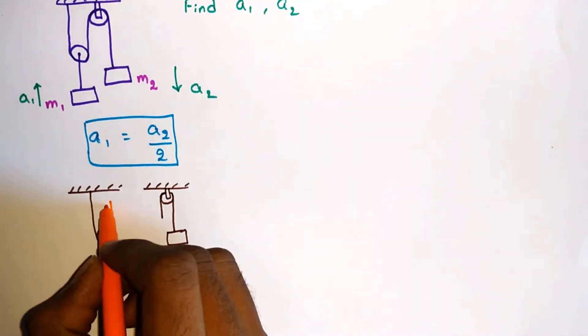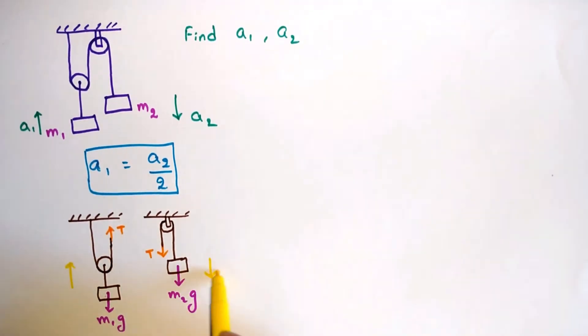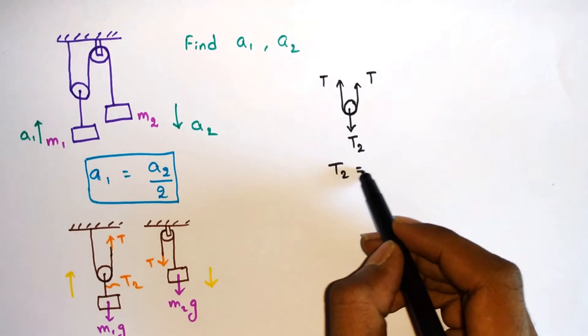T is the tension in the main string. The forces acting on the pulley are due to the weight forces. Let's take free body diagram of first pulley. Let T2 be the tension in the string supporting mass m1. Then we can write T2 = 2T.